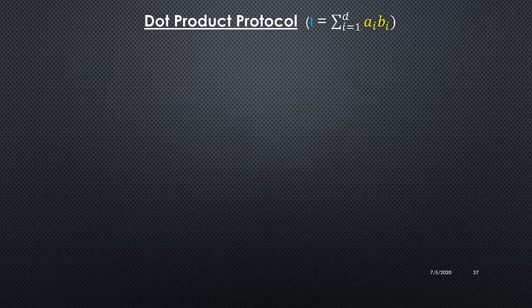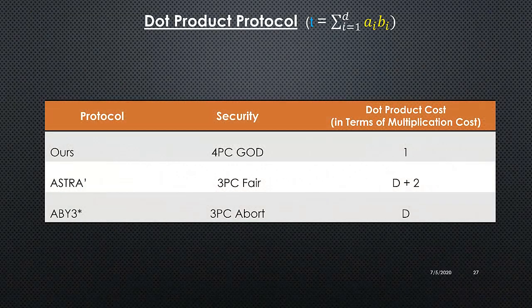Now let's see how the extension to the dot product protocol works. With a few tweaks, the cost of our dot product protocol equals the cost of just one multiplication, unlike previous ML frameworks. For example, ABY3 requires D multiplications where D is the size of the vector — so for two vectors of size one million, the dot product cost would be one million multiplications. In our case, the cost is independent of vector size, so even for two vectors of size one million, our cost equals that of one multiplication. This gives us significant efficiency gains.